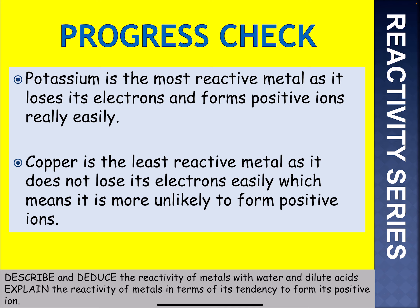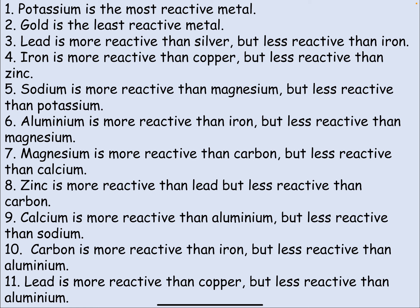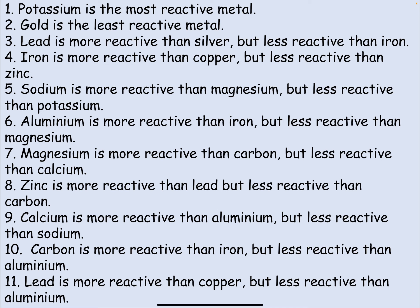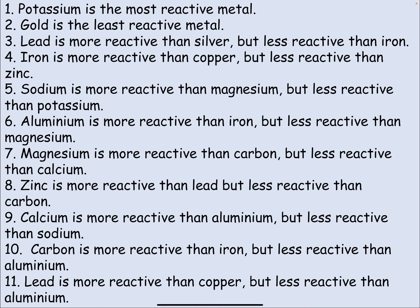Moving on — there are some following statements on the next slide. Reading the statements, put the different elements in order based on reactivity, with the most reactive at the top and the least reactive at the bottom. There are 11 statements. One thing to note: I'm going to include hydrogen in that list. Hydrogen is less reactive than lead and more reactive than copper. Pause the video and read the 11 statements to put them in the correct order.